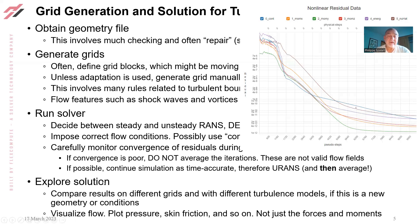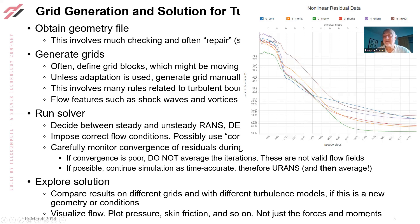I definitely want you to explore the solution. You should look at results on different grids with different turbulence models, especially if this is a new geometry or conditions. If you're doing the same Formula One car you've been doing for five years, then you may not need to try different turbulence models. It's really good to visualize the flow and make sure something crazy didn't happen — look at the pressure, the skin friction, the turbulence index, and all these things. Don't just get the forces and say, oh, the lift is where I want it, so the whole simulation must be good.